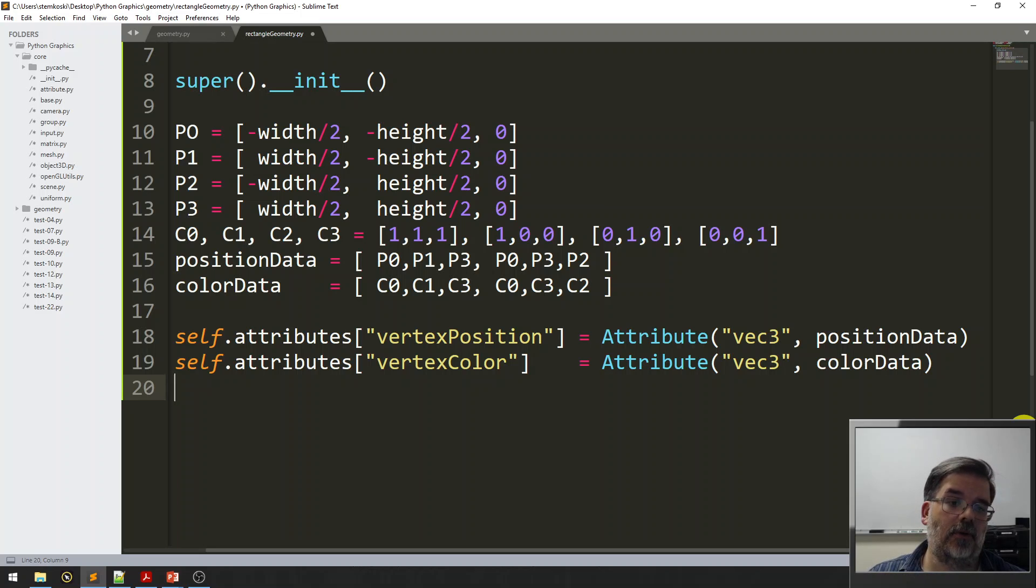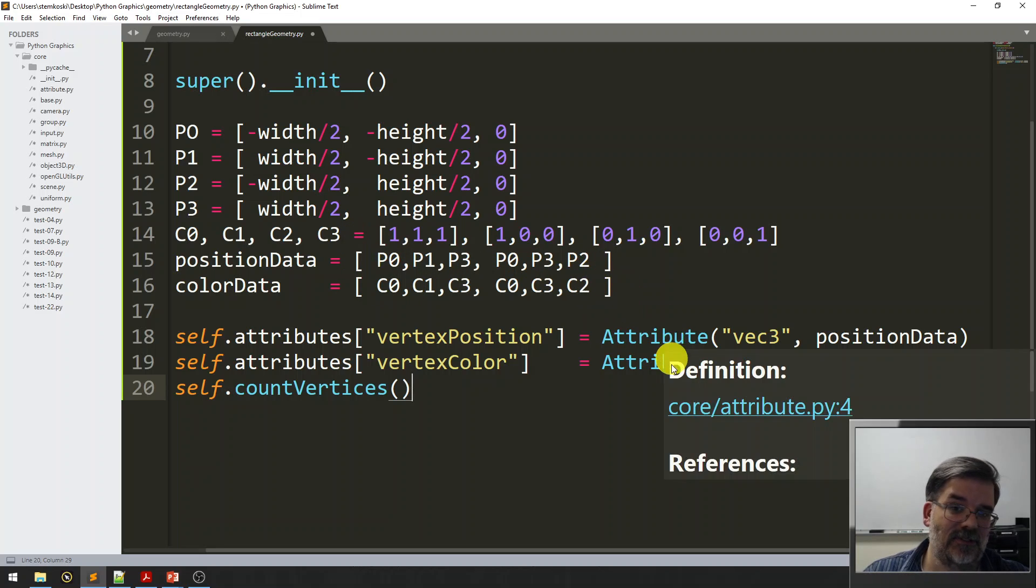Now that we've actually put in these arrays of data, now we can actually count the vertices. Just by running the count vertices function. Remember how that works. It's going to go into the attribute dictionary. And it's going to count how many objects are in one of these attributes. And the answer is six, because there's six vertices to be rendered. And that's about it.